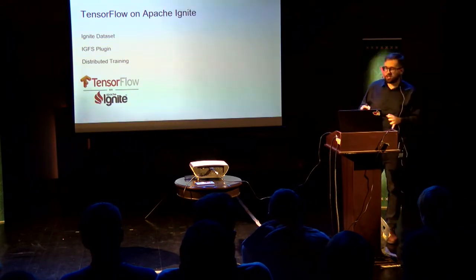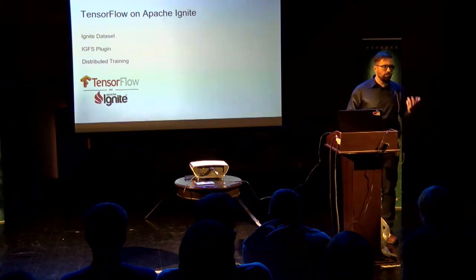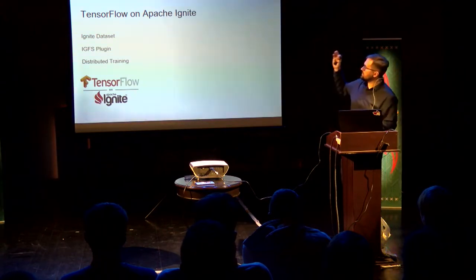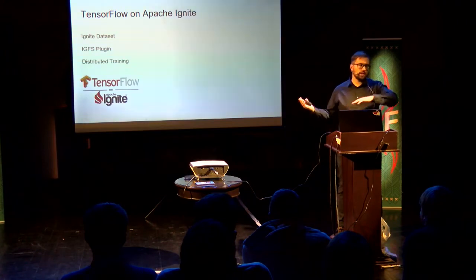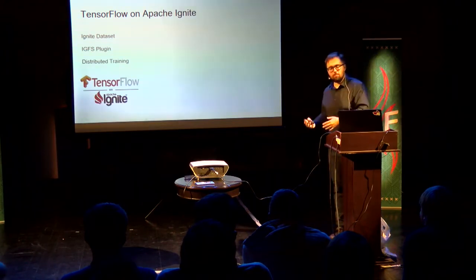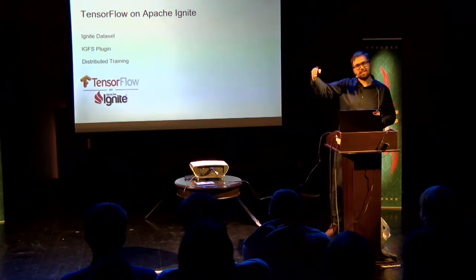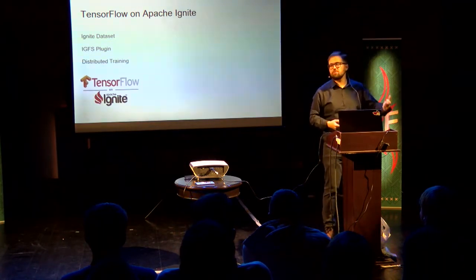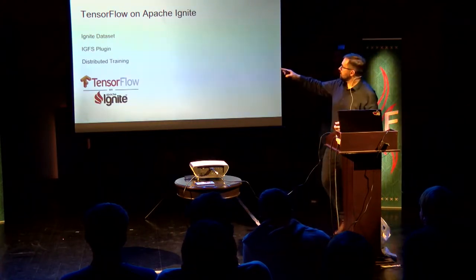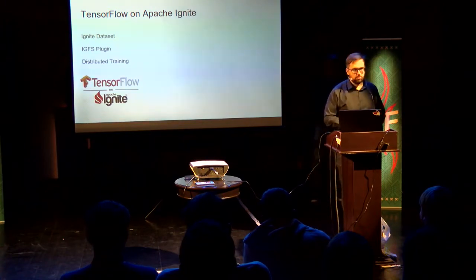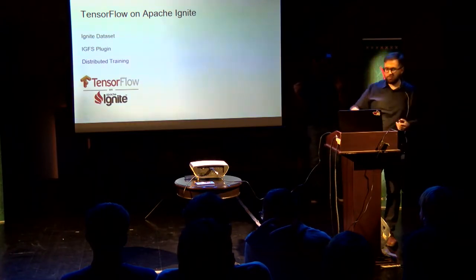TensorFlow in Apache Ignite is a toolset for deep learning that allows you to utilize all TensorFlow functionality and the distributed nature of Apache Ignite. Currently it consists of three components: Ignite datasets — a projection of data where you can send and read data from Apache Ignite; an IGFS plugin that allows use of the Apache Ignite distributed file system, like HDFS but in memory, for checkpointing and communication with TensorFlow; and in progress — distributed training, which helps make real distributed training using TensorFlow algorithms across the Apache Ignite cluster.